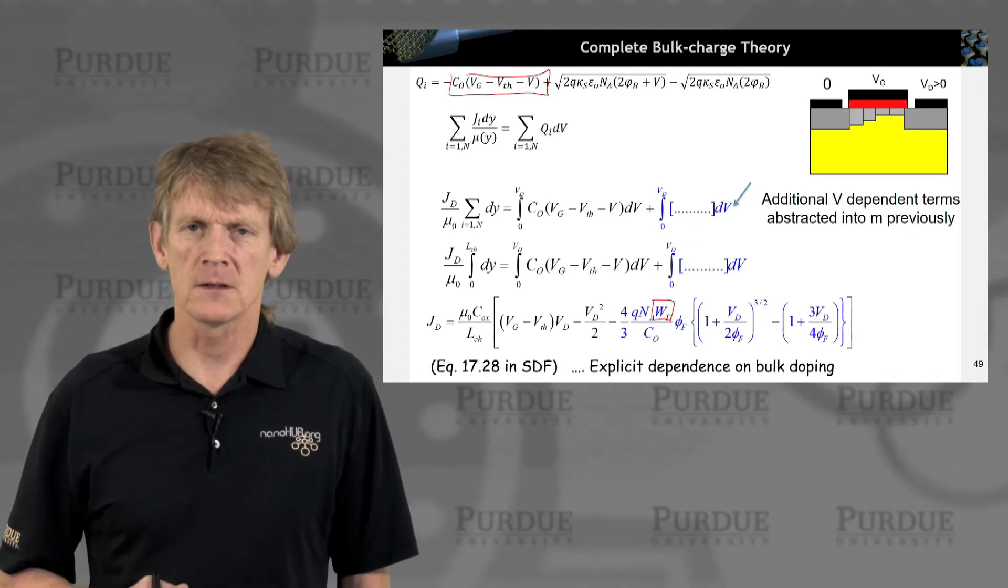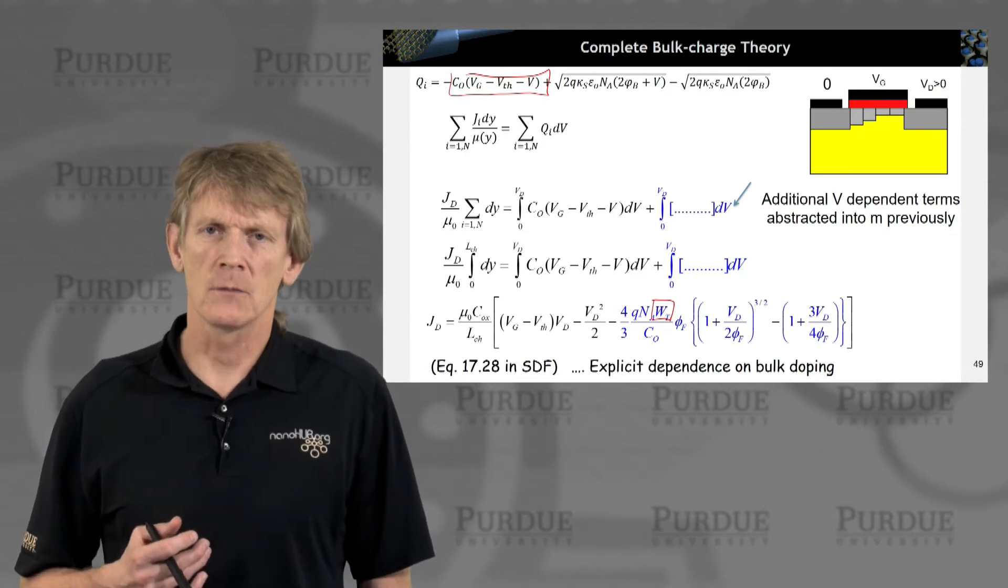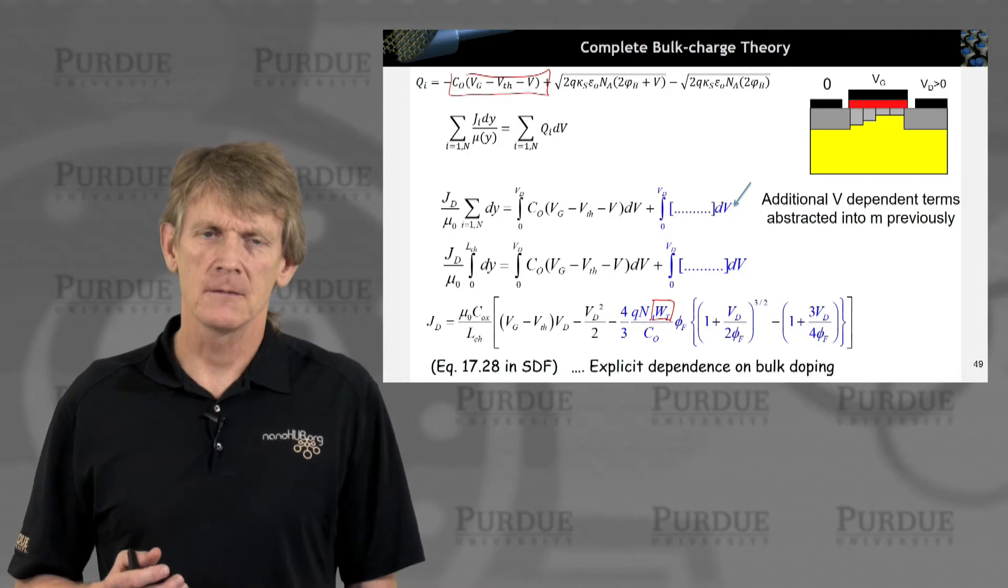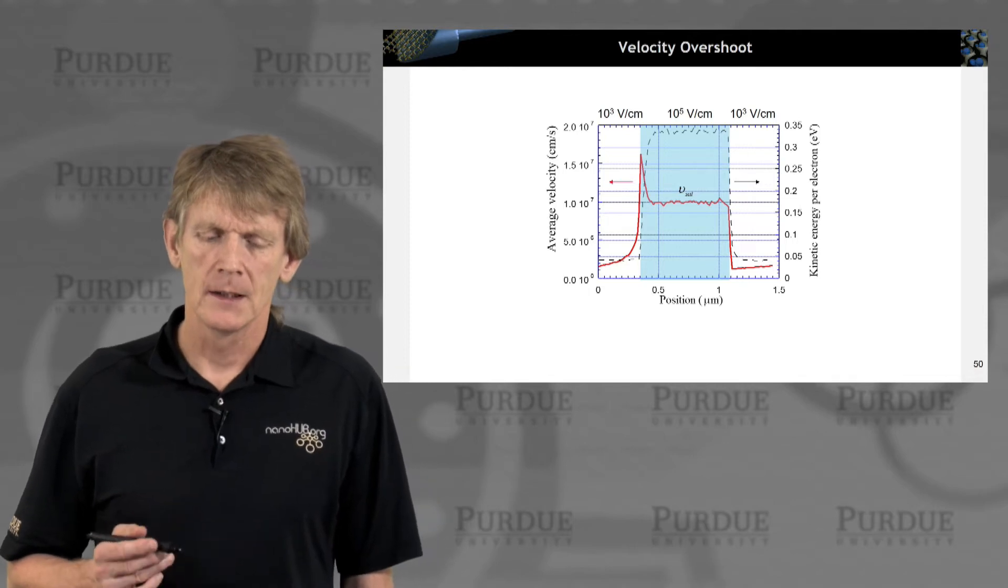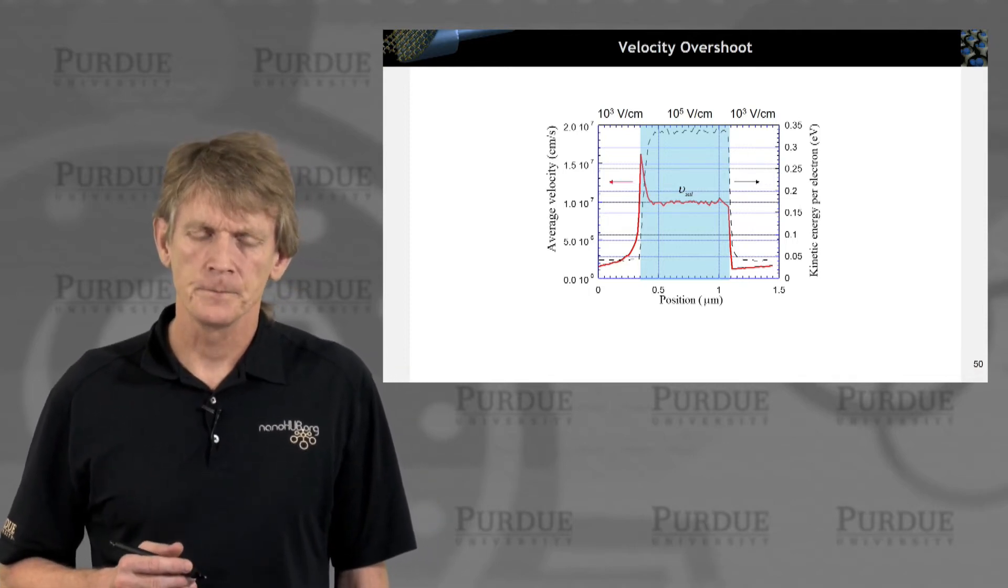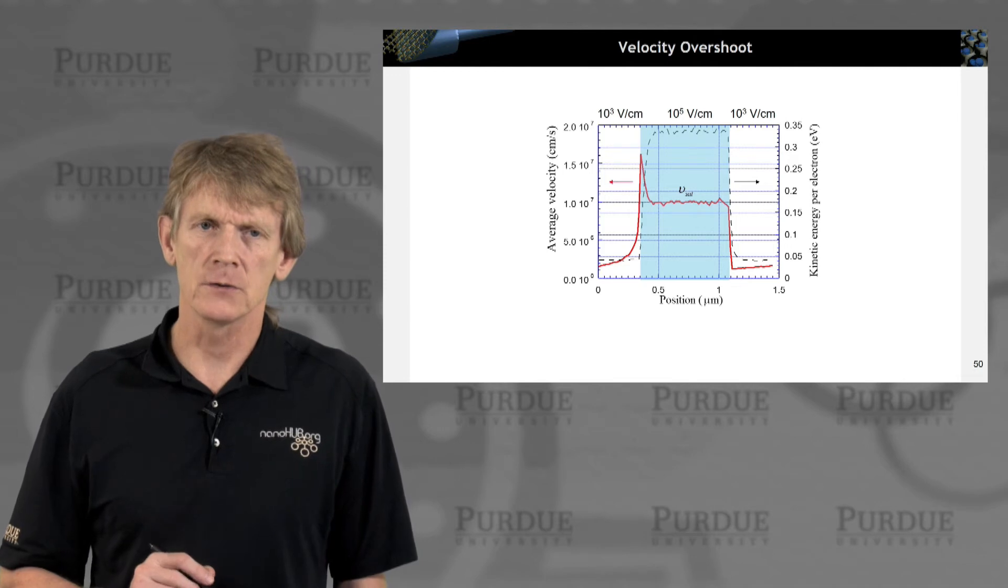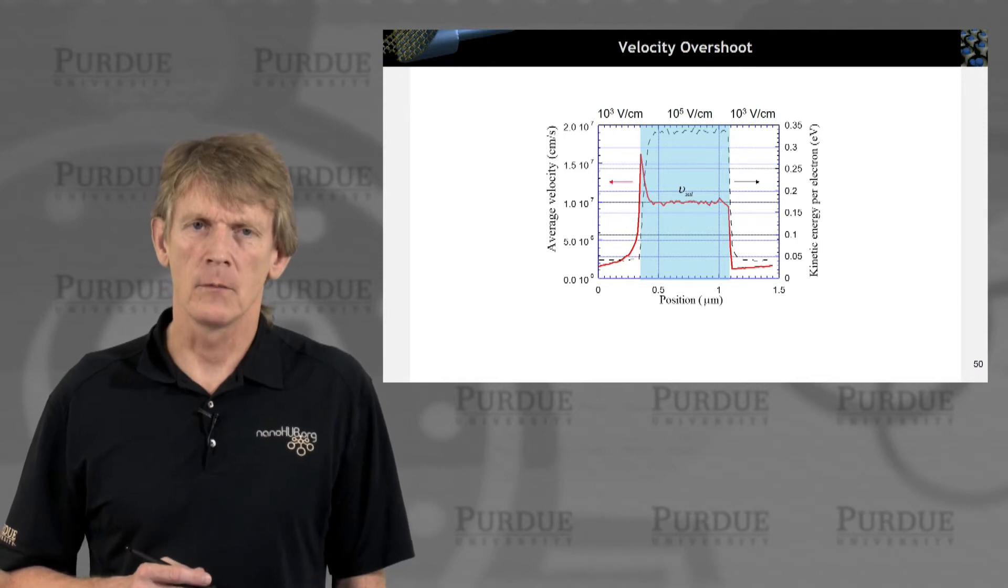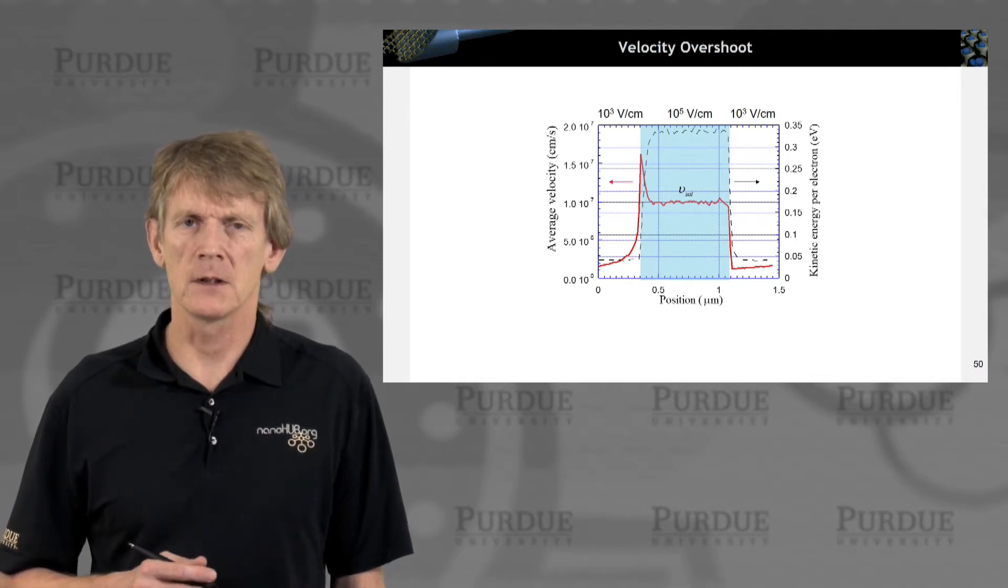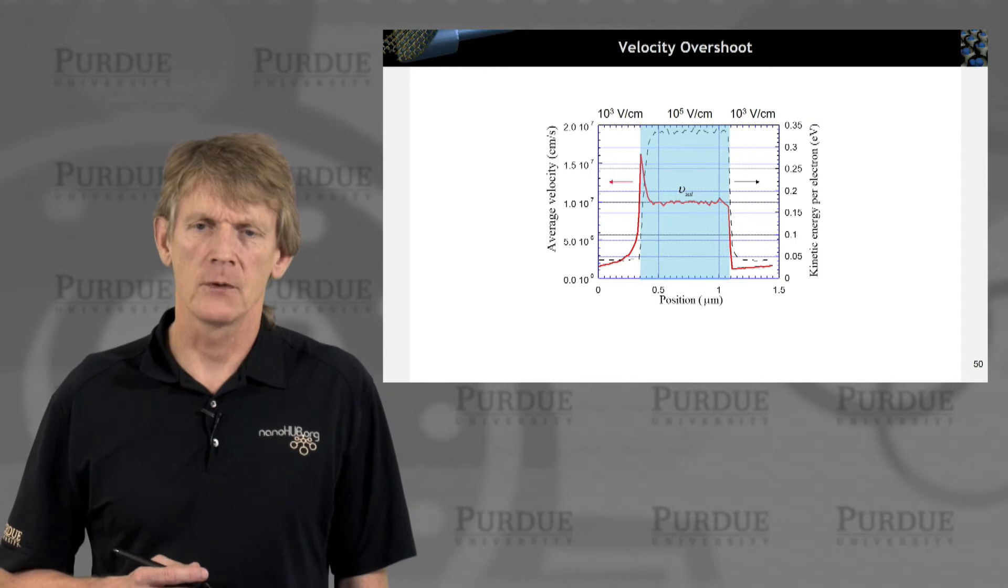These analytical expressions have been very helpful over the years until device scaling has reached a point where additional effects really needed to be considered. And one of those effects is velocity overshoot. So we talked about the saturation velocity. That is really not quite true in ultra-scale devices. There is something called the velocity overshoot where the carriers for a brief distance can travel significantly faster than what the equilibrated or relaxed representation of these carriers in the semiconductor might show.